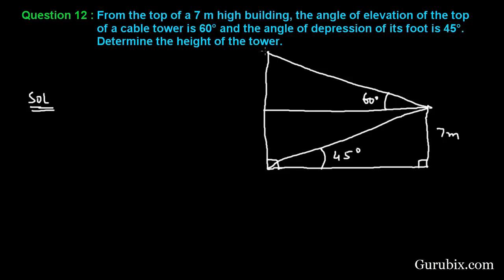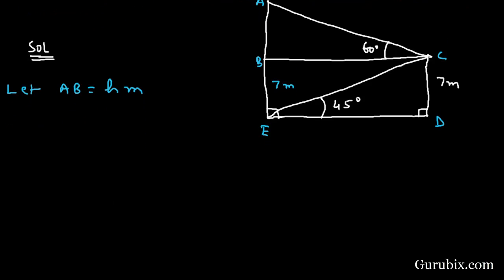This angle is given as 45 degrees. We have to find the height of the tower. Label the points: A, B, C, T, and E. Here BCDE is a rectangle. CD is 7 meters, therefore BE will also be 7 meters. Let AB equal h meters.